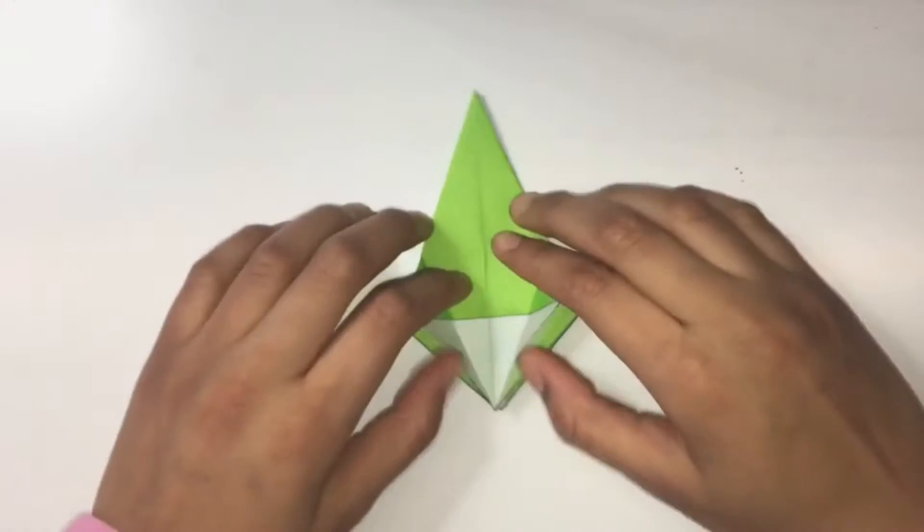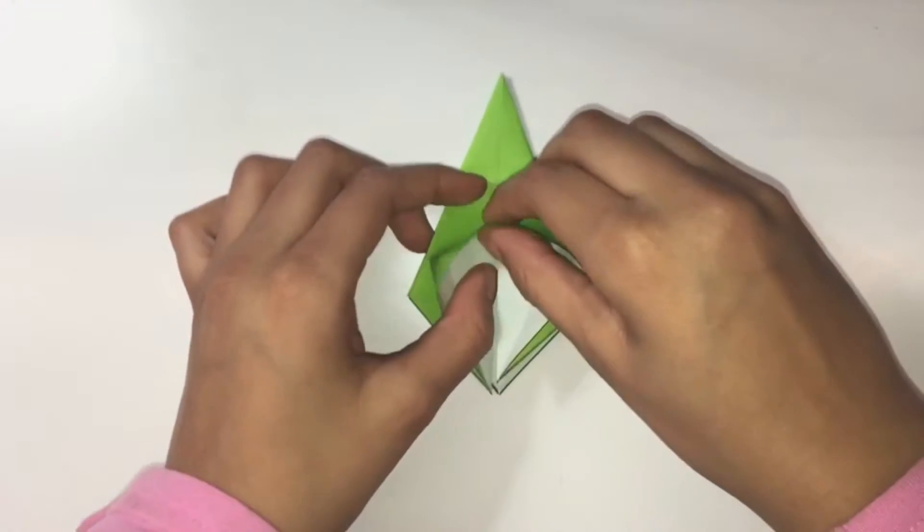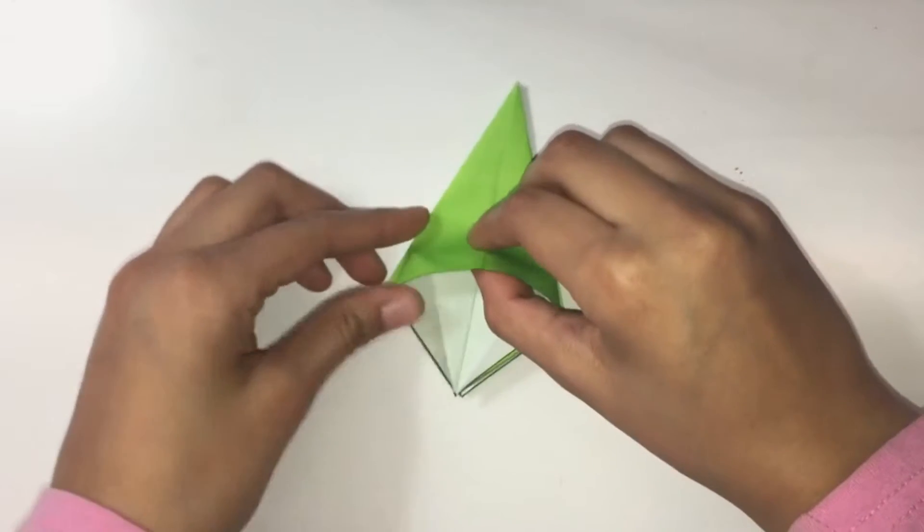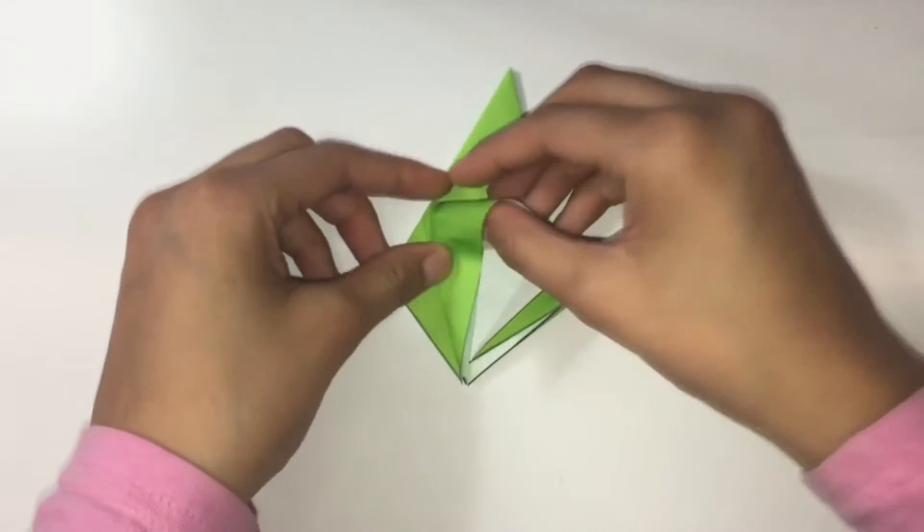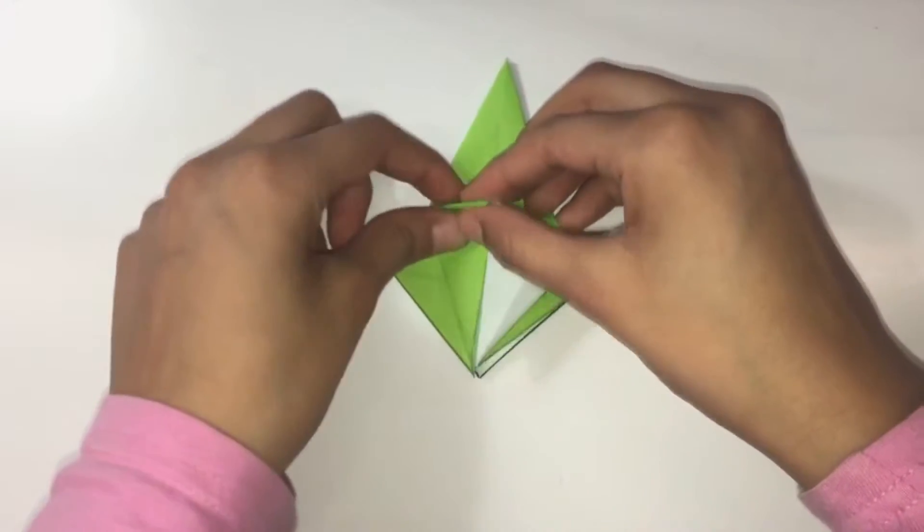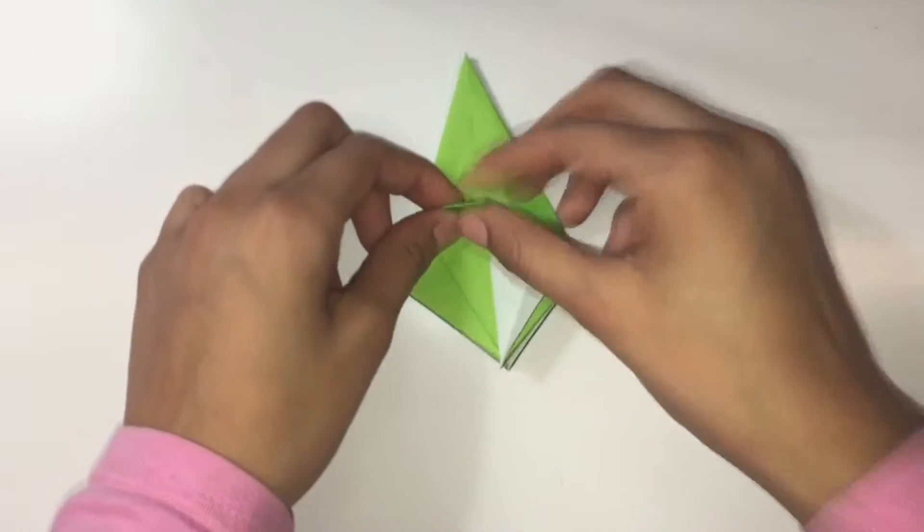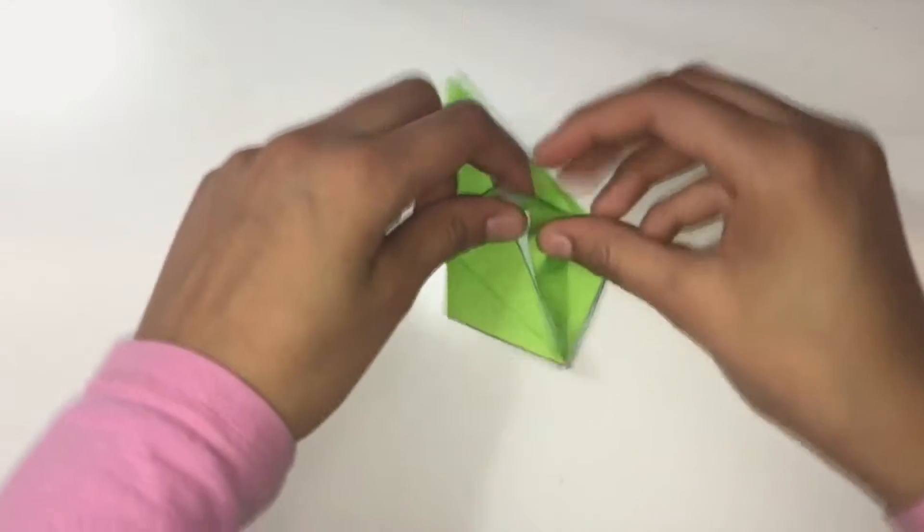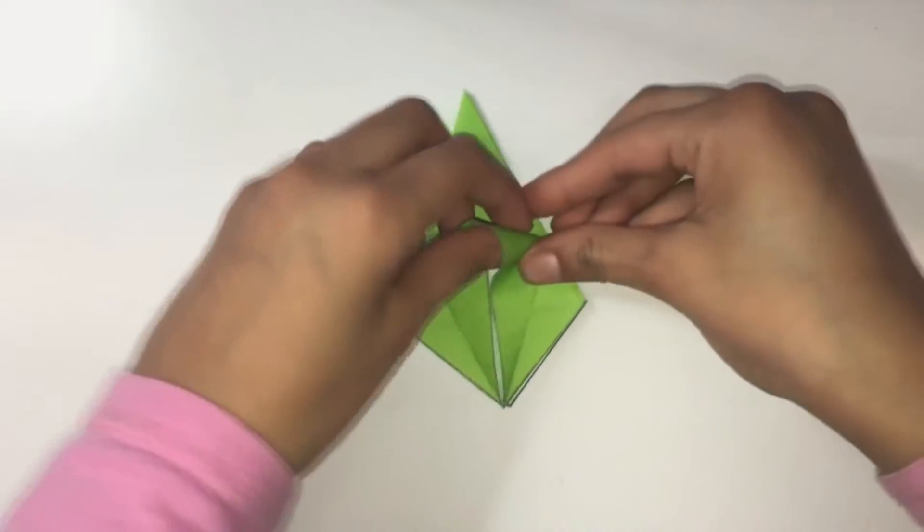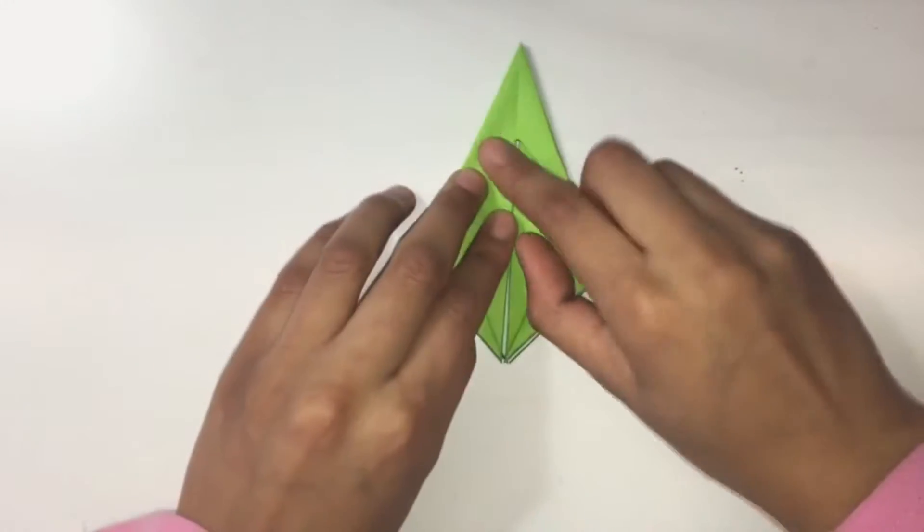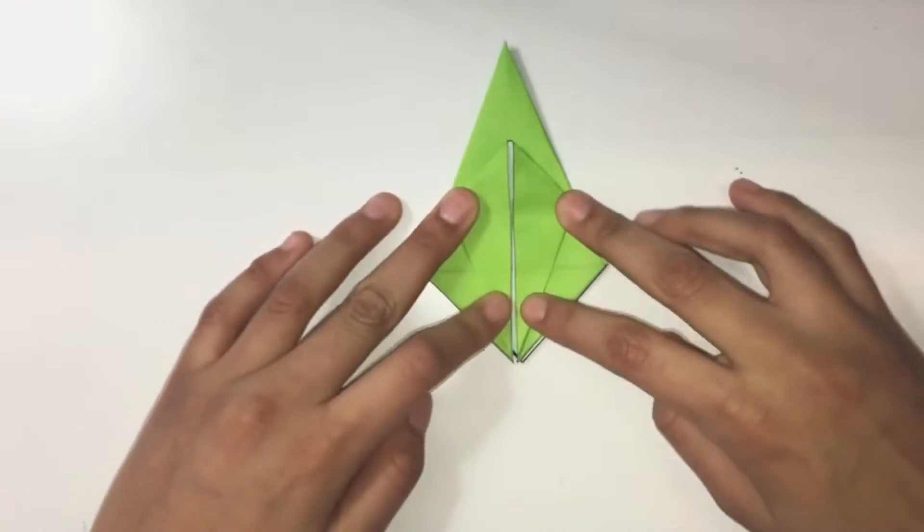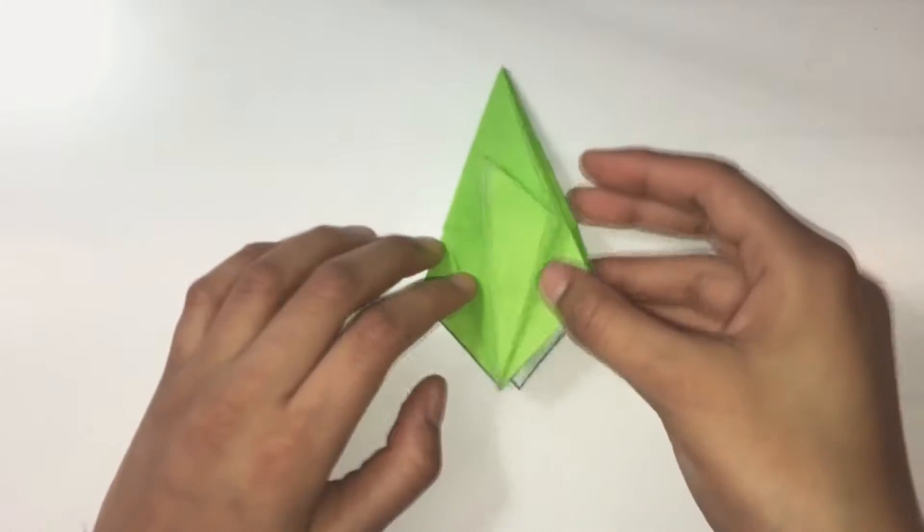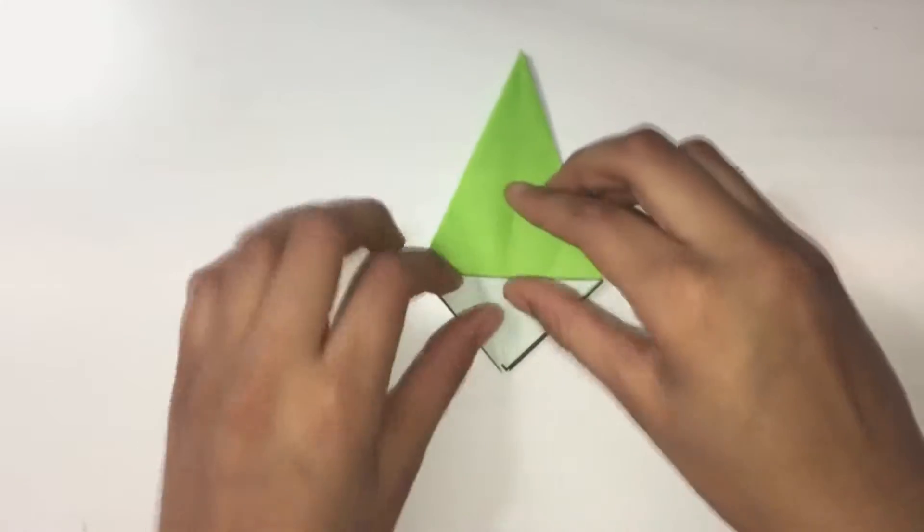Next we are going to petal fold. So just pull this up and then line these edges along to the center. Make sure they line up all the way through. One done. Turn to the back and do the same.